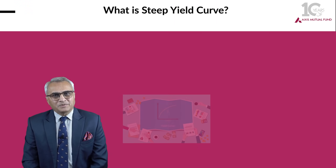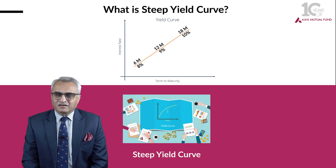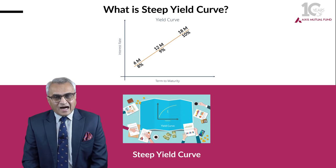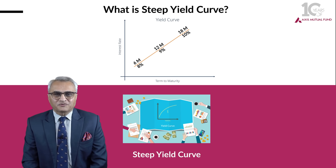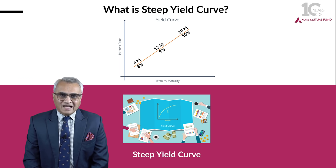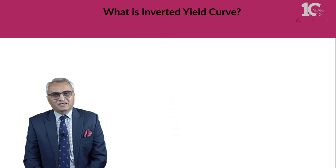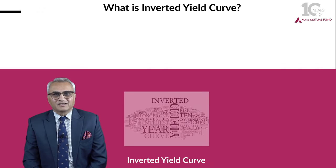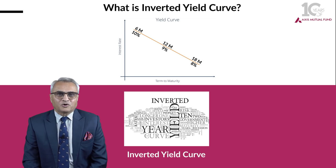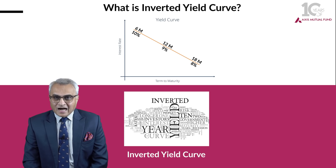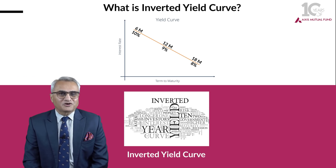What is a steep yield curve? A steep yield curve is where the borrower is willing to pay higher interest for longer dated maturity and lower interest for a shorter dated security. What is an inverted yield curve? An inverted yield curve is when the borrower is willing to pay higher interest for shorter dated maturity and lower interest for longer dated maturity.